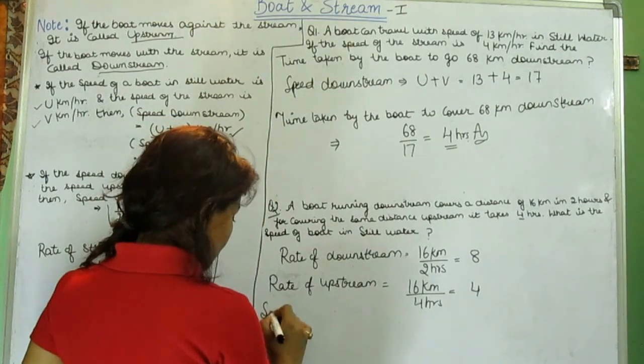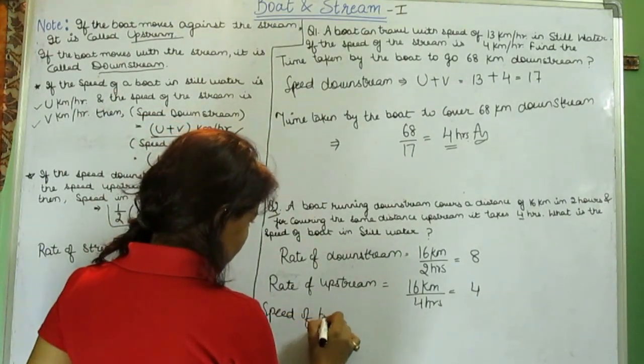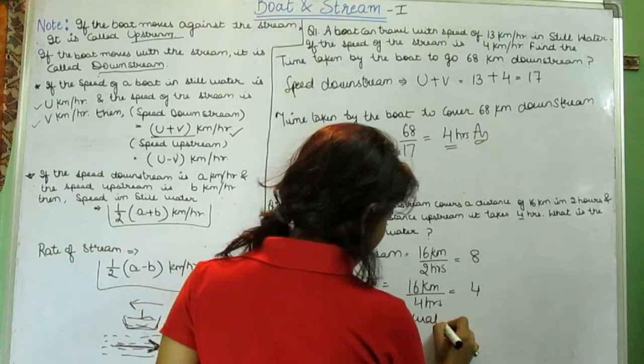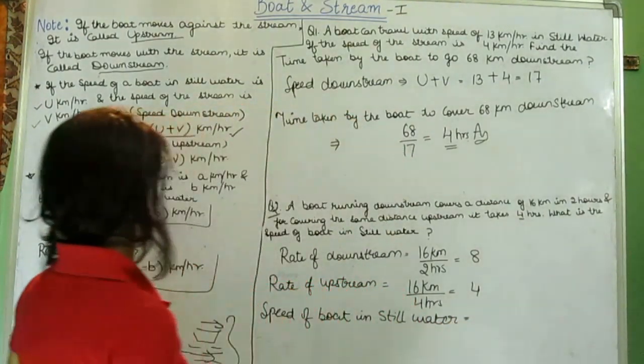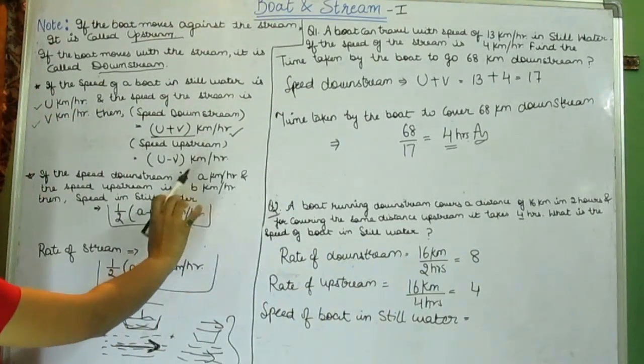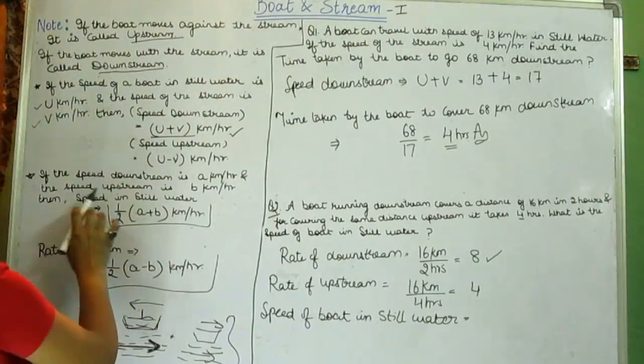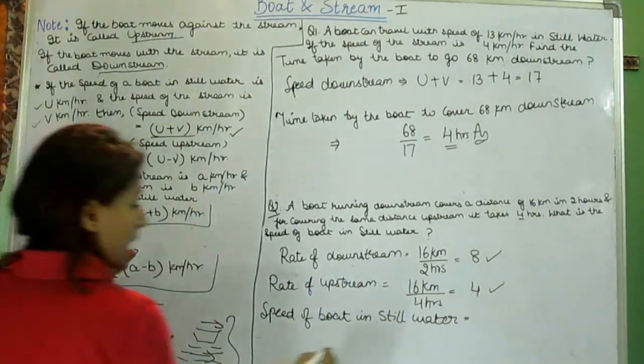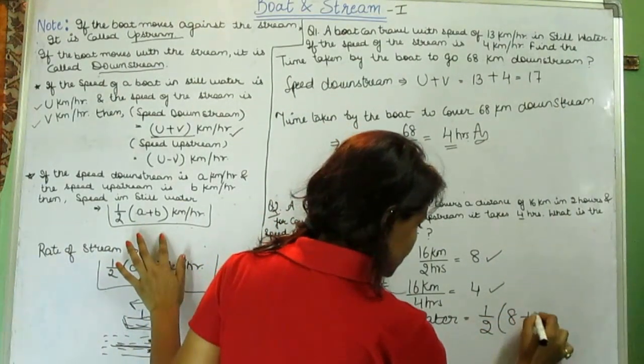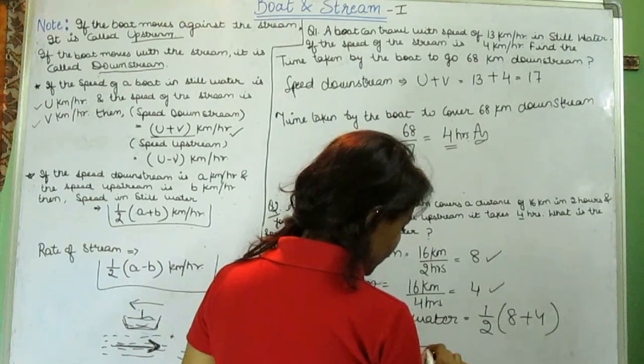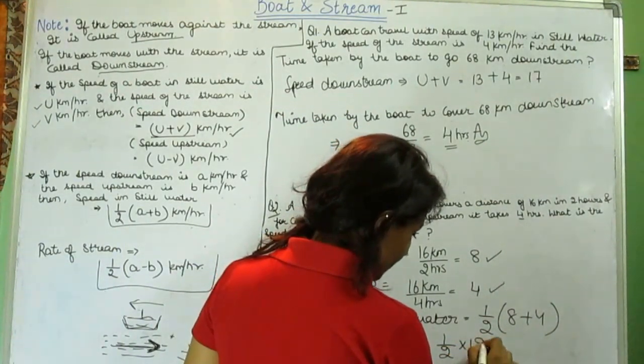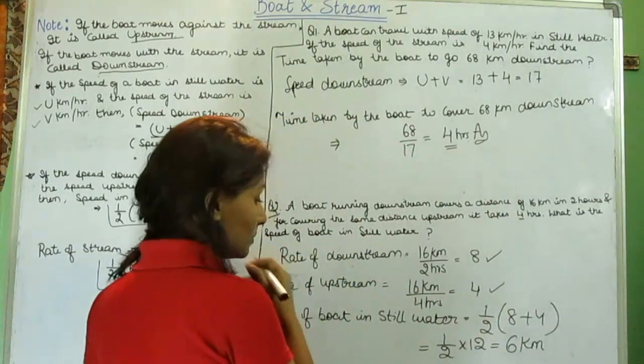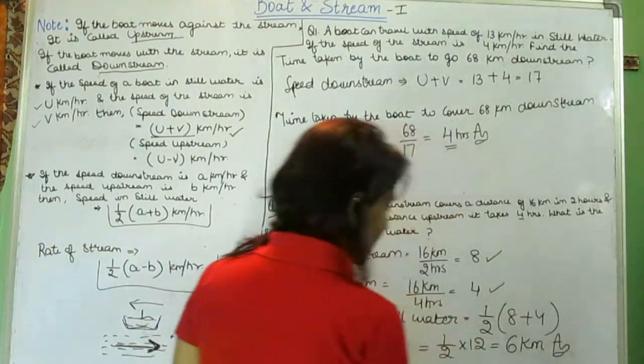So now speed of boat in still water, downstream is A and upstream is B, then the speed of boat in still water will be half of A plus B. That will be half of 12, which is equal to 6 km/hr. The speed of the boat will be 6 km/hr. This is the answer.